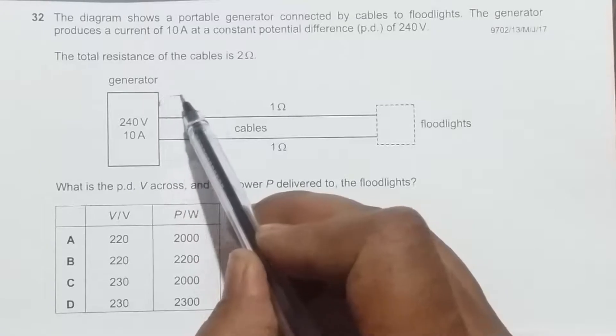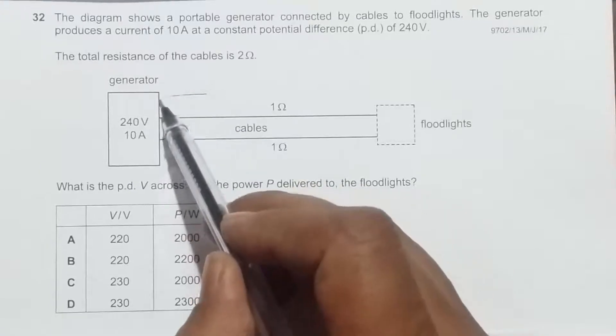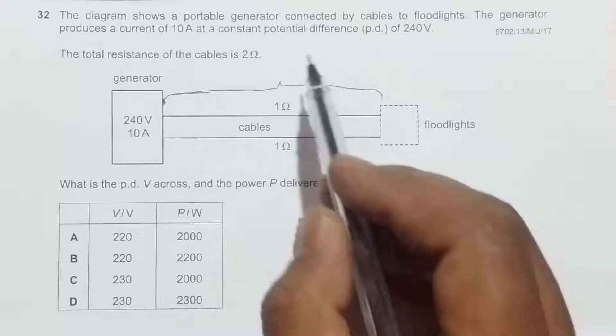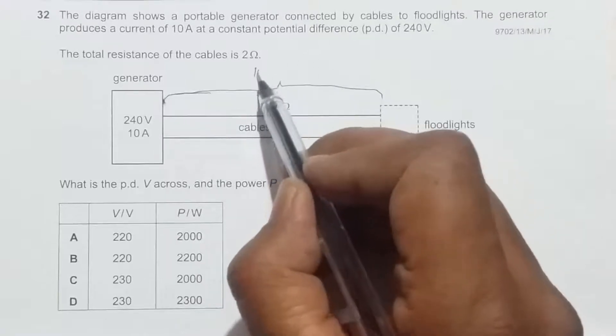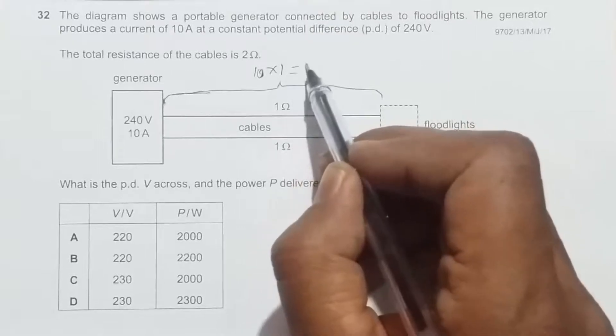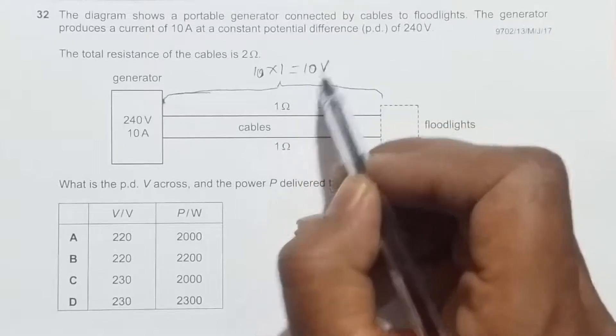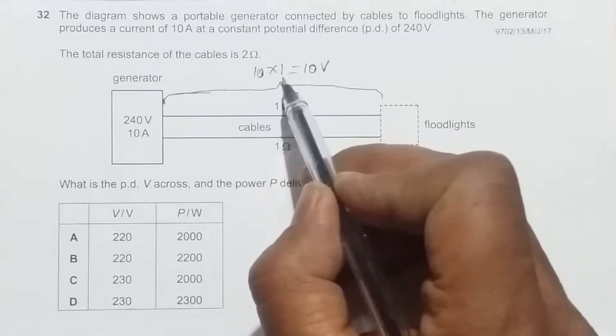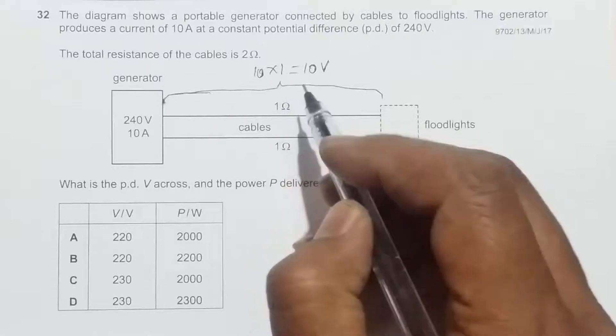The PD across this region in the wire is 10 into 1 equals 10 volts. So 10 amperes is the current and 1 ohm is the value of the resistance here.